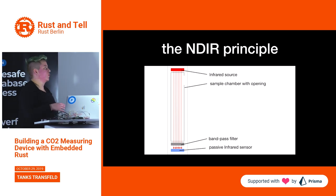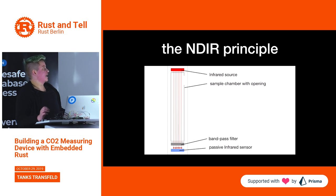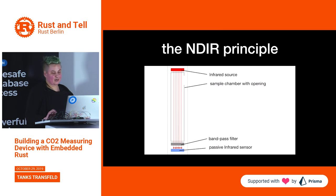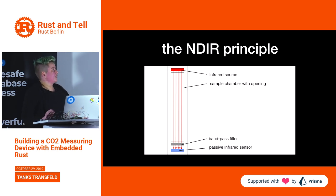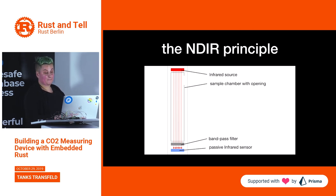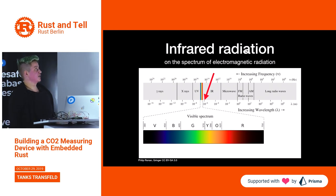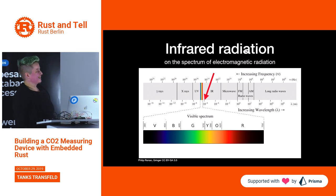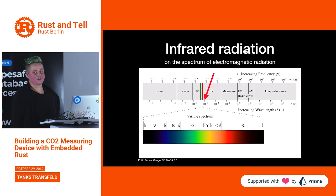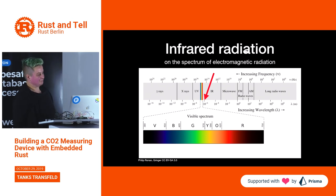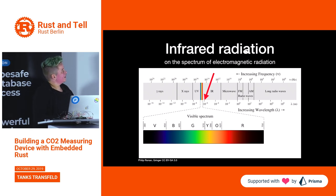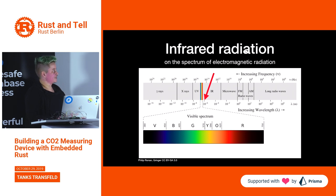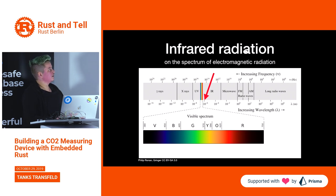The principle this sensor is built on is actually pretty simple. We have a sample chamber with an opening where ambient air can flow in and out. At one side there is an infrared source. The rays go down to a bandpass filter which only lets through specific wavelengths, and they are passed to a passive infrared sensor. Infrared radiation is on the electromagnetic spectrum just outside of visible light, and the wavelength most interesting for this type of sensor is around 4.2 micrometers.